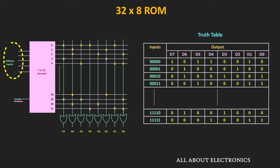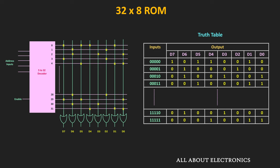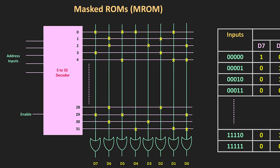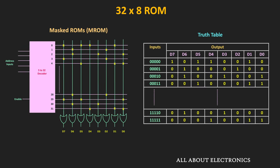Once the data is stored in the ROM, with the help of the address lines and the enable input, we can read the data from the ROM. Whenever we want to read the data, we apply the specific address to the decoder and enable it. As soon as we enable the decoder, the data stored at the specific location will be available at the output. This type of ROM is known as the Mask ROM, because during fabrication, based on the user requirement, masking has been done for these 1s and 0s. In the Mask ROM, the programming is done during fabrication and once fabricated, the data cannot be altered during operation.